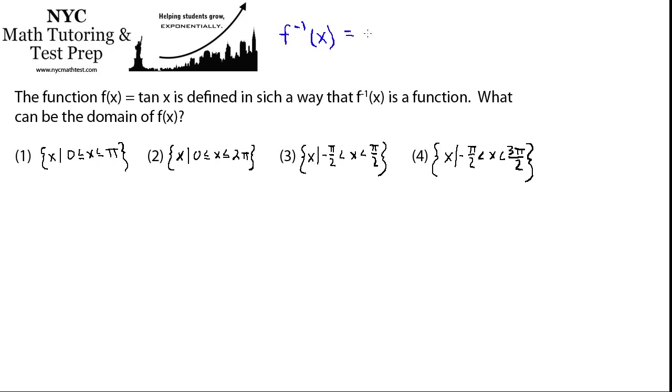So the inverse of the tangent of x is sometimes written like this: tan^(-1) of x. That's one way you could write it. And this is also called the arctan. So either one of these is okay. Arctan of x.